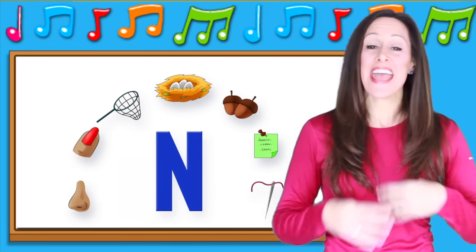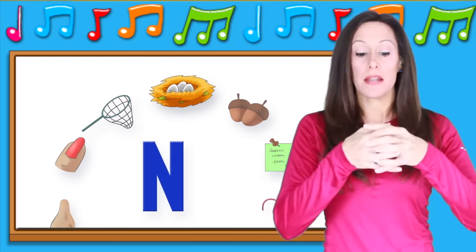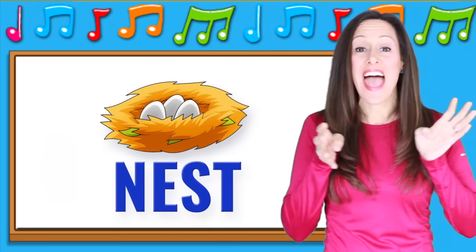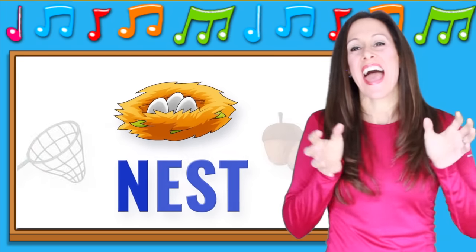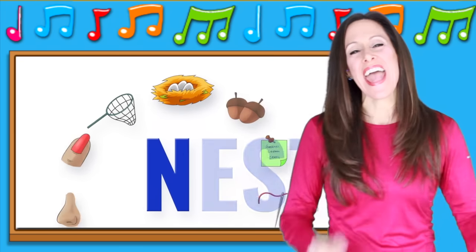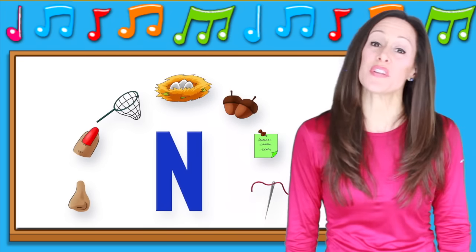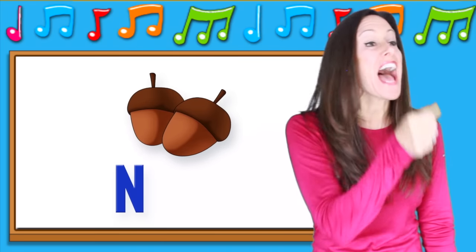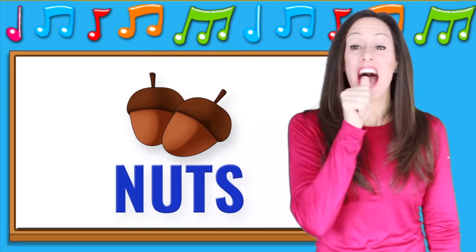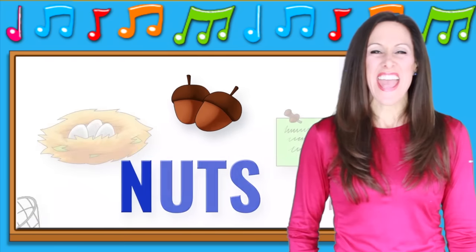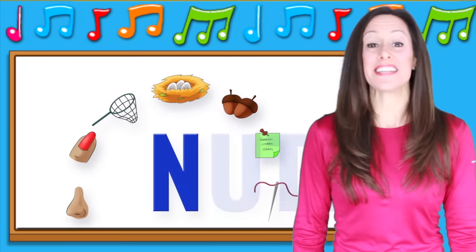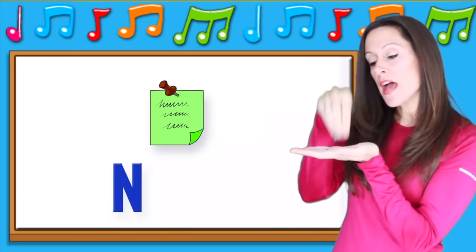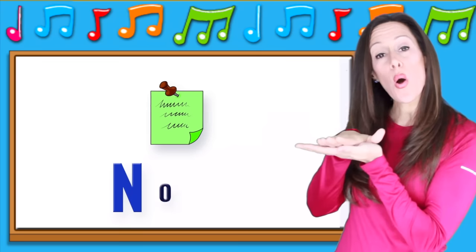N is for n-n-nest, n-n-nest. N is for n-n-knots, n-n-knots, n-n-knots. N is for n-n-note, n-n-note.